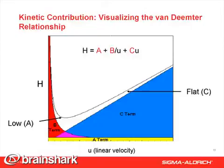So the B term, this red portion, shows the importance of keeping flow rates adequately high because if it's too low, diffusion really takes over.